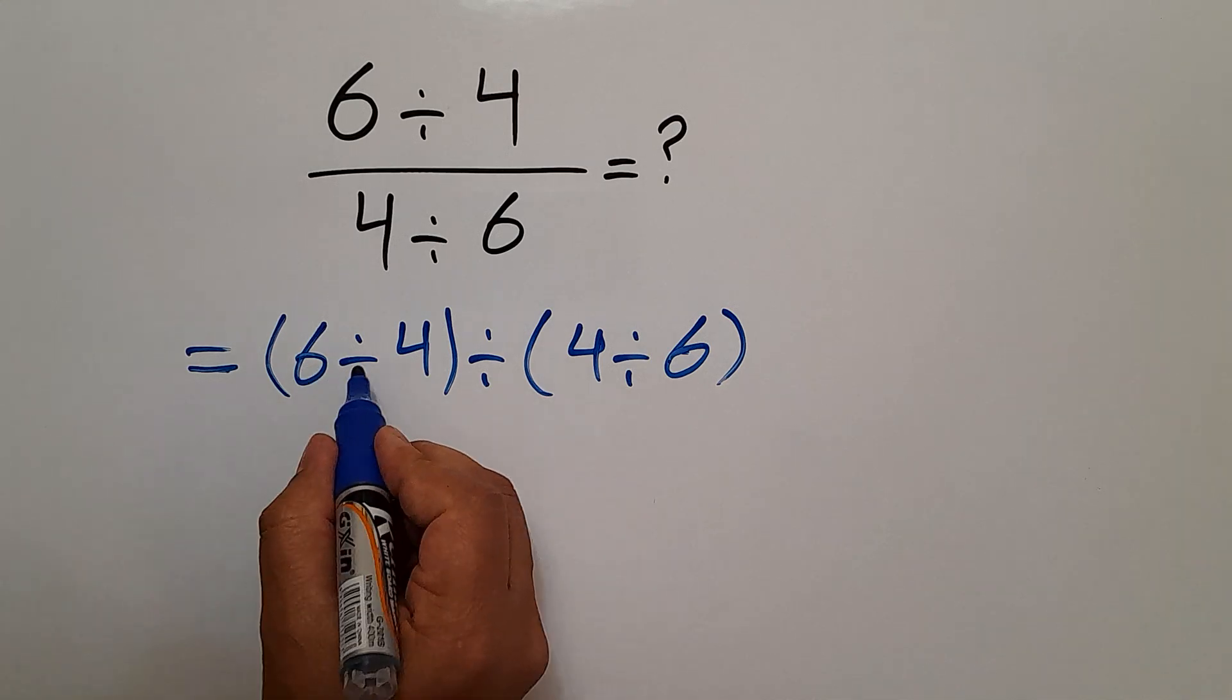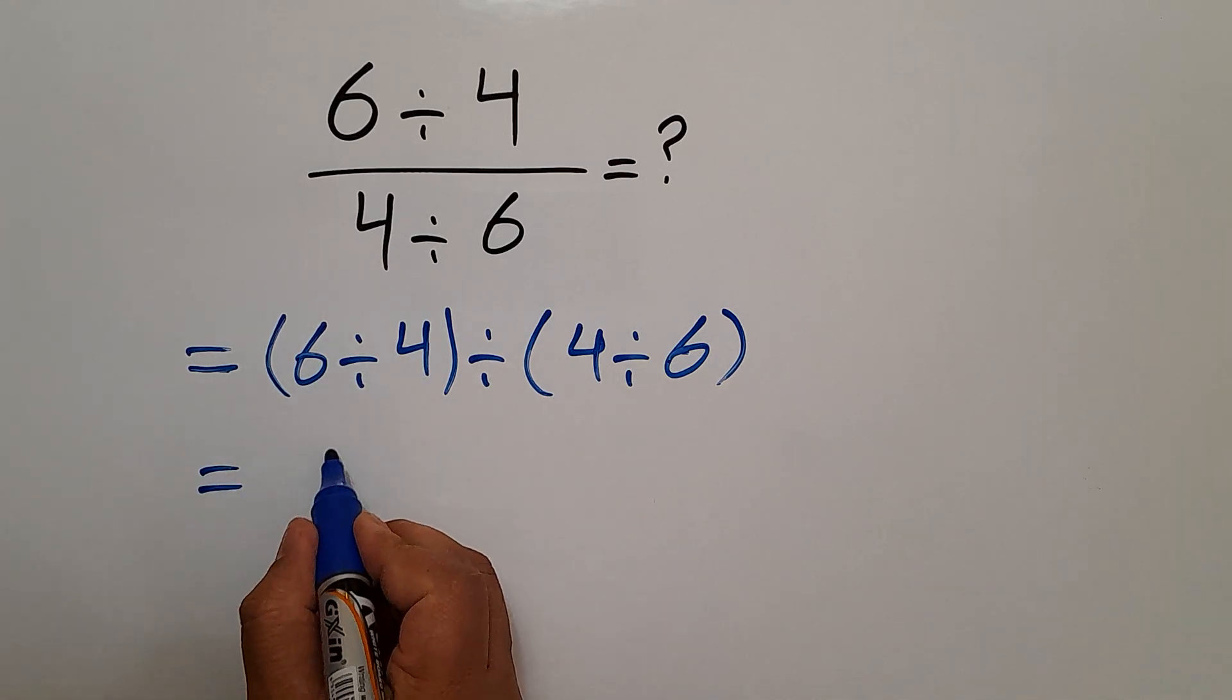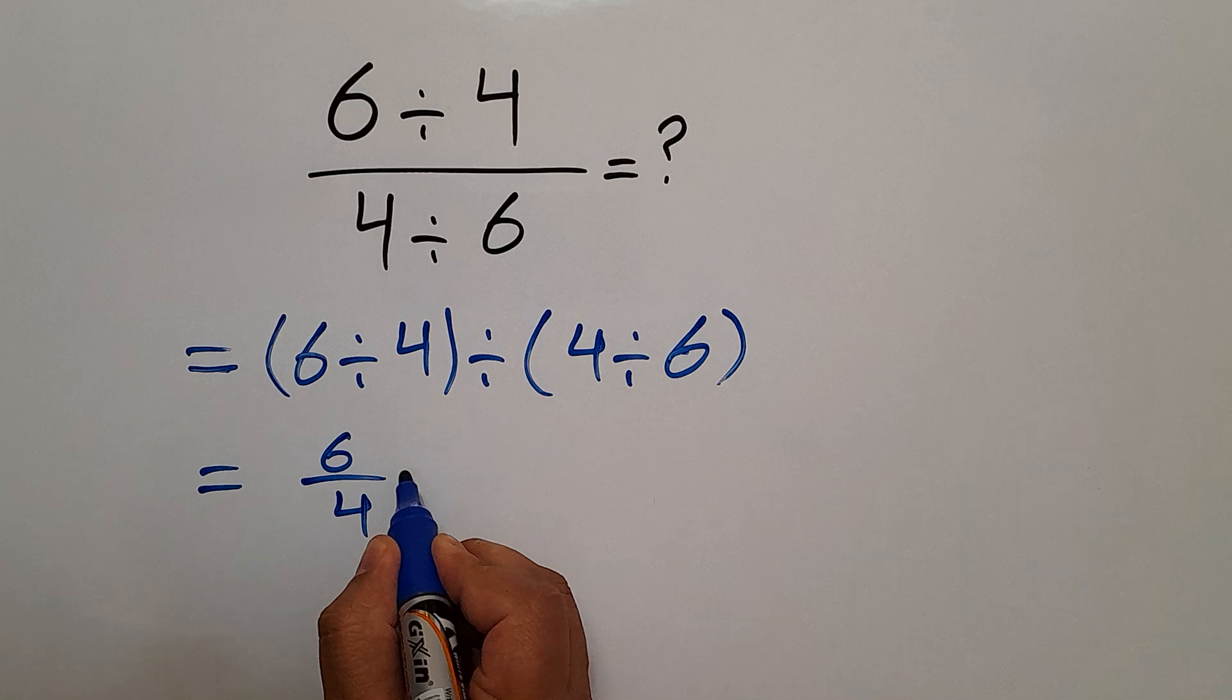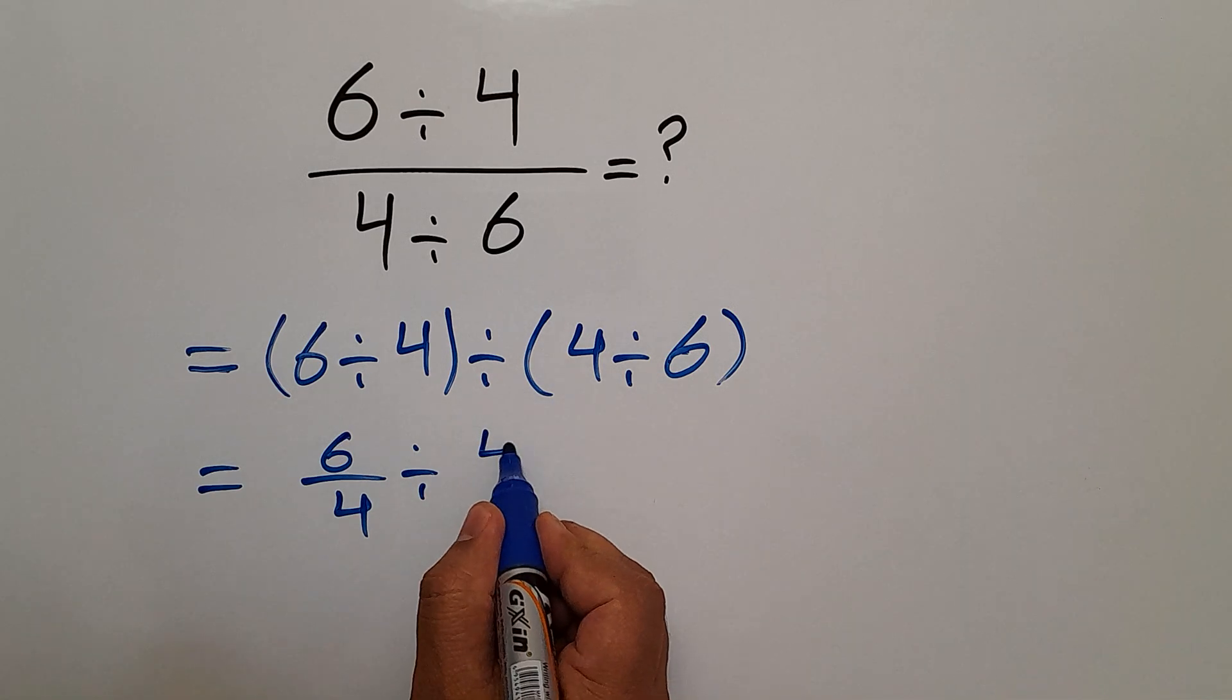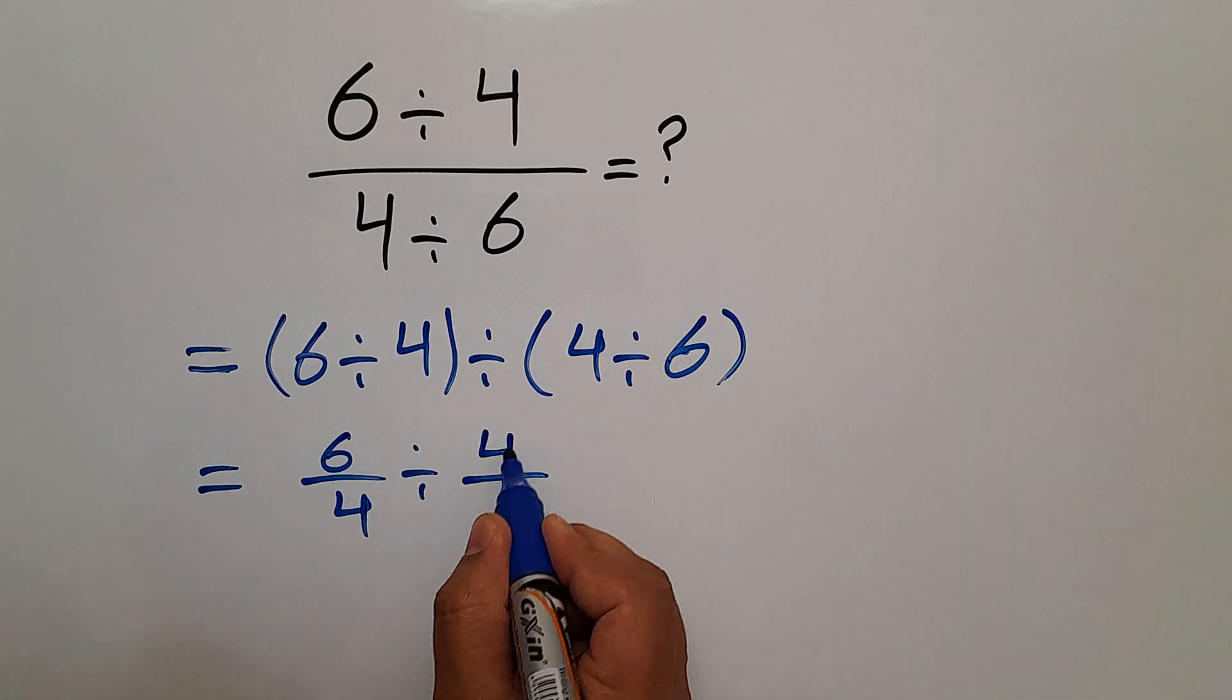And now, 6 divided by 4 can be written as 6 over 4 divided by 4 over 6. Okay?